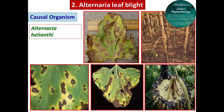Under high atmospheric humidity, several spots coalesce to form bigger irregular lesions and form large patches, leading to the drying and defoliation of leaves. The disease sometimes causes rotting of flower heads and affects the quality of seeds by reducing the germination percentage. In cases of severe rotting, the rotted heads fall down to the soil, destroying the yield contribution of the sunflower crop.